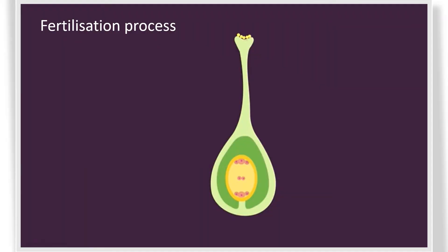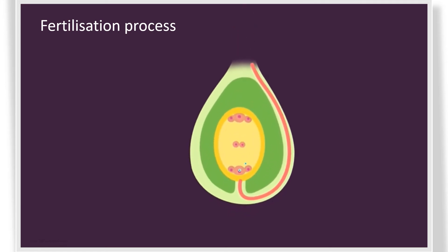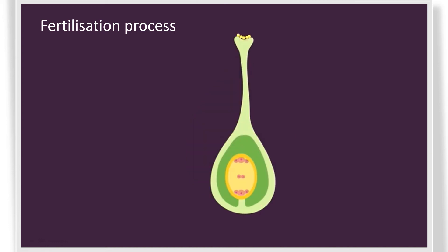After pollination, fertilization will occur. When the pollen grain falls onto the stigma, a pollen tube carrying the male gamete grows toward the ovary. After the pollen tube penetrates the ovary, the male gamete fuses with the female gamete — this is the fertilization process.